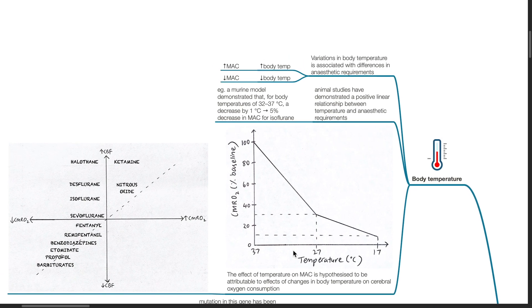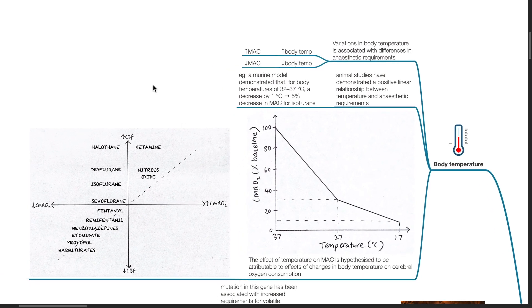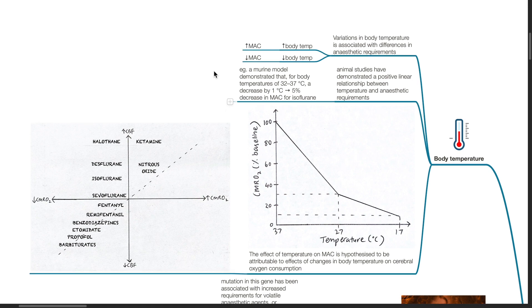Body temperature: variations in body temperature is associated with differences in anesthetic requirements. Increased body temperature results in increased MAC and reduced body temperature results in decrease in MAC. Animal studies have demonstrated a positive linear relationship between temperature and anesthetic requirements.